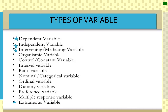We have several types of variables, but there are at least six most common variables which I will be giving emphasis today. First, we have the dependent variable. Then we have the independent variable. We have intervening or mediating variable. We have extraneous variable. We have control or constant variable. We have nominal or categorical variable, and others.